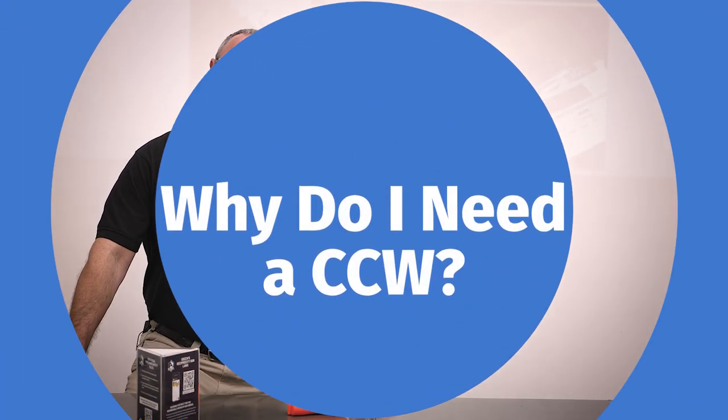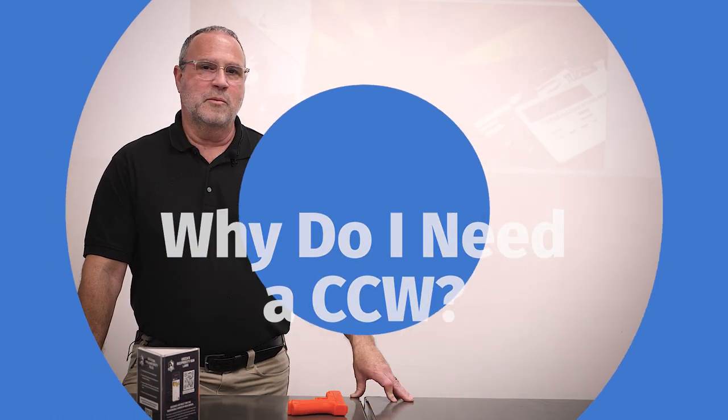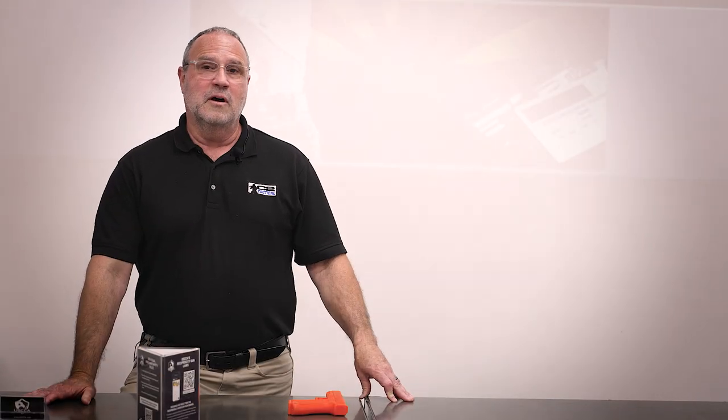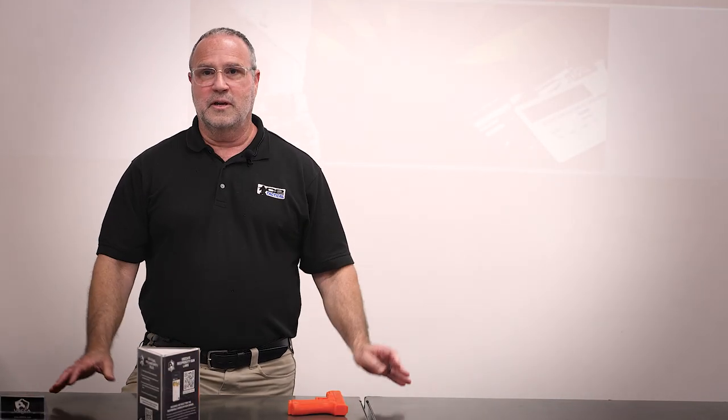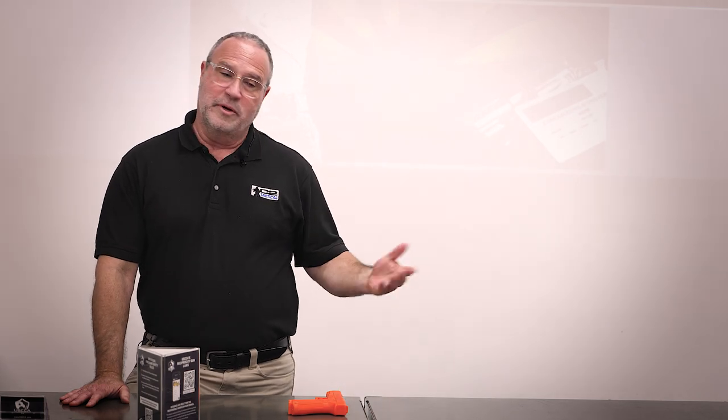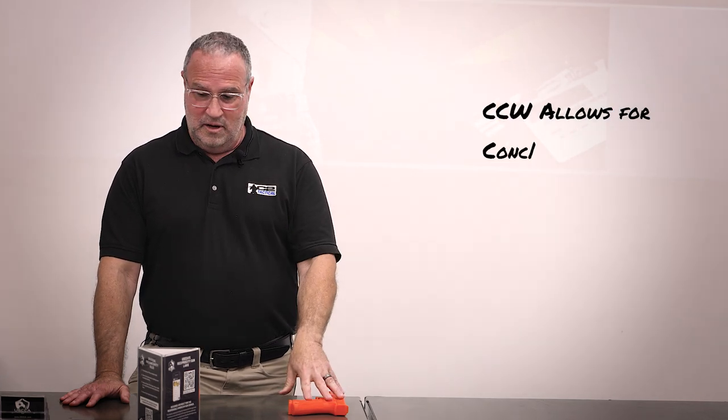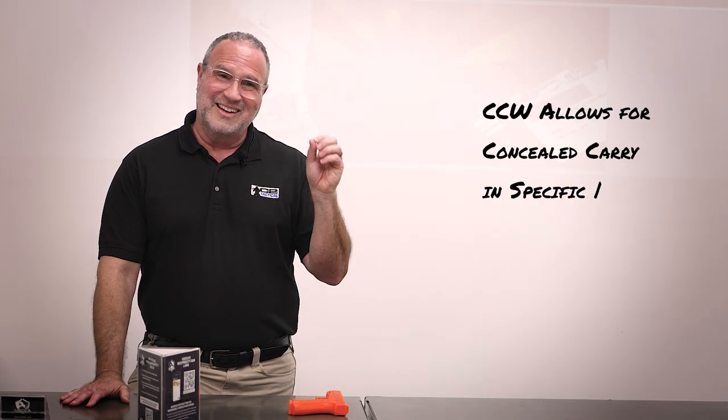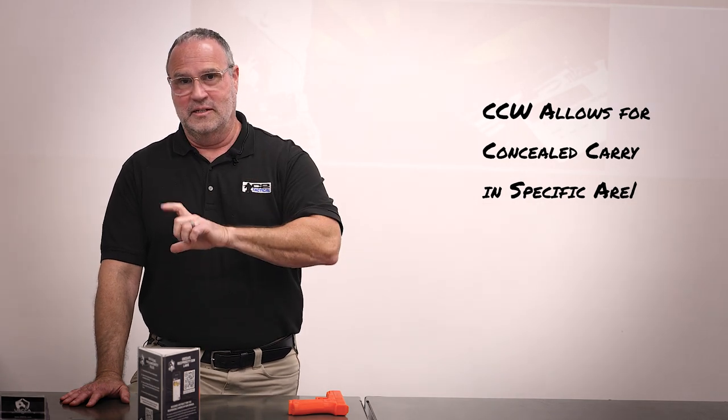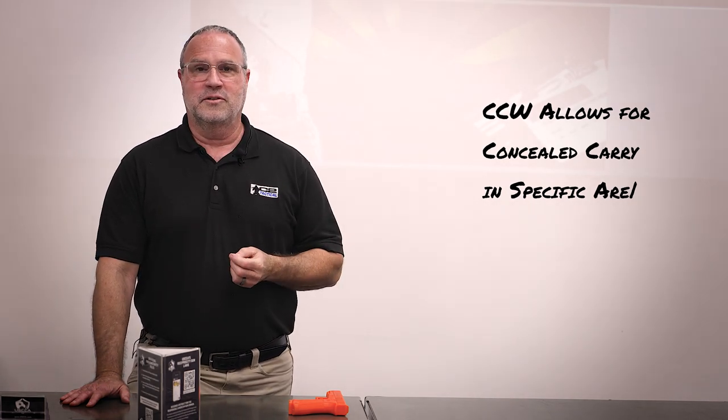Having a concealed carry permit allows you to do a couple things that you can't do if you do not have one. Arizona is an at-will state. It's an open carry state, and it's also a concealed carry, what they call discrete carry state. You can carry a gun without a CCW anywhere, except for some significant places, and that's what the CCW allows you to do.